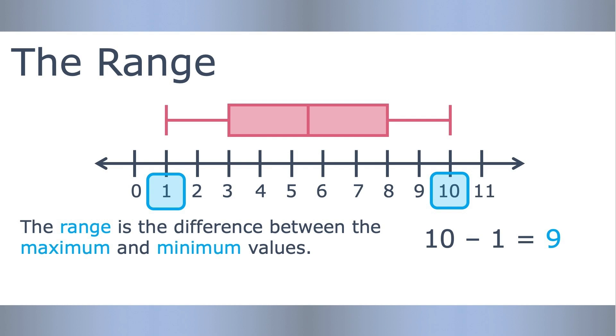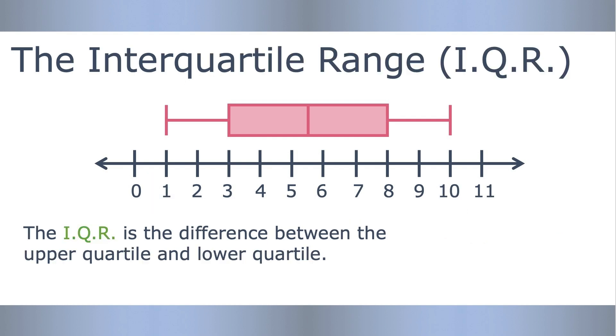The interquartile range, also known as IQR, is the difference between the upper quartile and lower quartile values. It's a way to measure the middle 50% of the data. With this data, we need to take 8 minus 3, so the interquartile range is 5. So what does the IQR actually tell us?